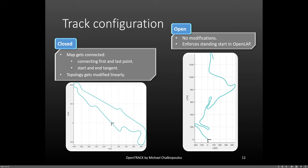We can have both closed and open tracks in OpenTrack. When a map is closed, three things happen. Firstly, the first and the last point get connected. Secondly, the map is made tangent at the start and finish lines. And thirdly, things like elevation and banking are linearly modified to have the same value at the first and last points.